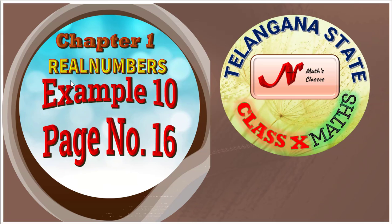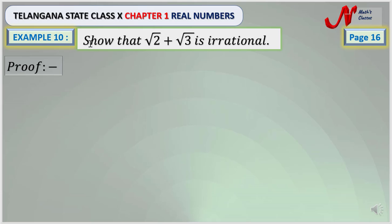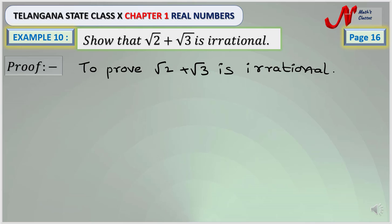In today's class we are going to discuss example 10, page number 16. In example 10, it is given to show that √2 + √3 is irrational. To prove √2 + √3 is irrational, we have to consider that √2 + √3 is rational.